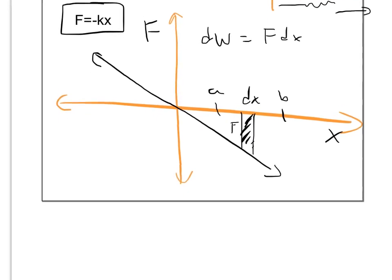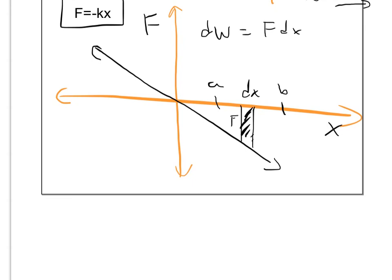Well, what is our force? Our force is negative kx. So to find the amount of work done, we could integrate negative kx dx from x initial to x final, and that's going to give us the work done by a spring.